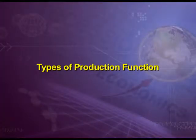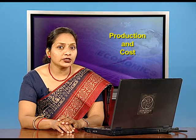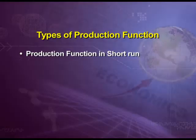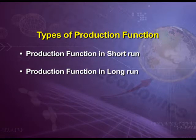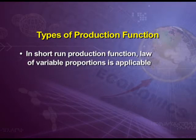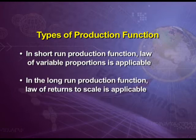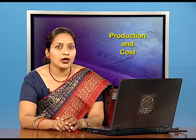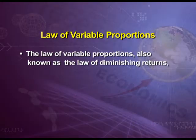Today we will elaborate the concept of types of production function. Basically production function is of two types: production function in the short run and production function in the long run. In the short run, the law of variable proportions is applicable, and in the long run, the law of returns to scale is applicable. First we will understand the law applicable in the short run.